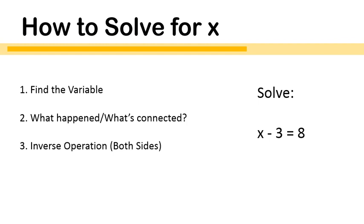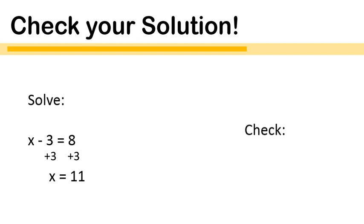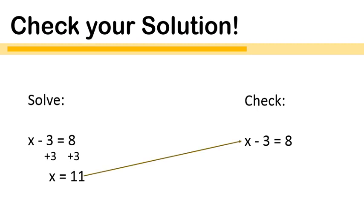Let's take a look. I'm going to first find my variable — x is my variable. What happened to x or what's connected to it? Minus 3. It's x minus 3 equals 8. So I'm going to do the inverse to both sides. In other words, I'm going to add 3 to both sides of this equation. So now I have x minus 3 plus 3 on the left side of the equal sign and 8 plus 3 on the right. The positive and negative 3s cancel each other out. You're left with x by itself on the left and 11 as your answer on the right. To check my work, I take the original equation x minus 3 equals 8 and plug in the answer: 11 minus 3 equals 8. 8 is equal to 8.